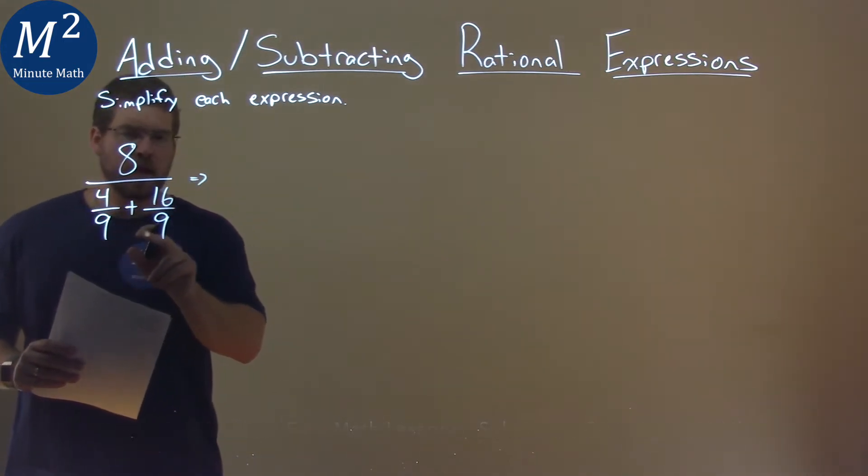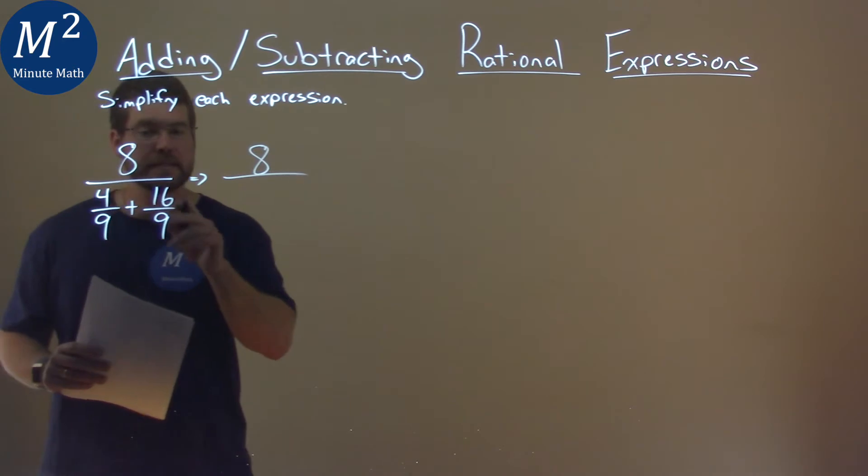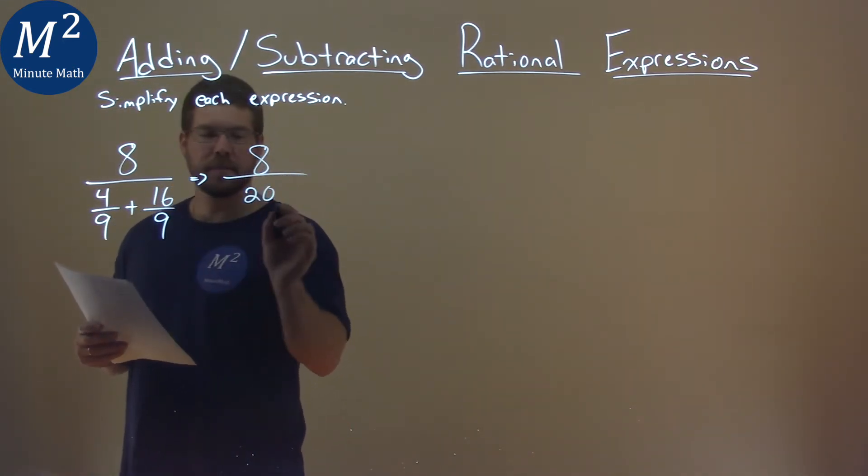Well luckily for us in this denominator, they already have the same base for these two fractions. So the top stays as 8, but 4 ninths plus 16 ninths is 20, 4 plus 16 is 20, over 9.